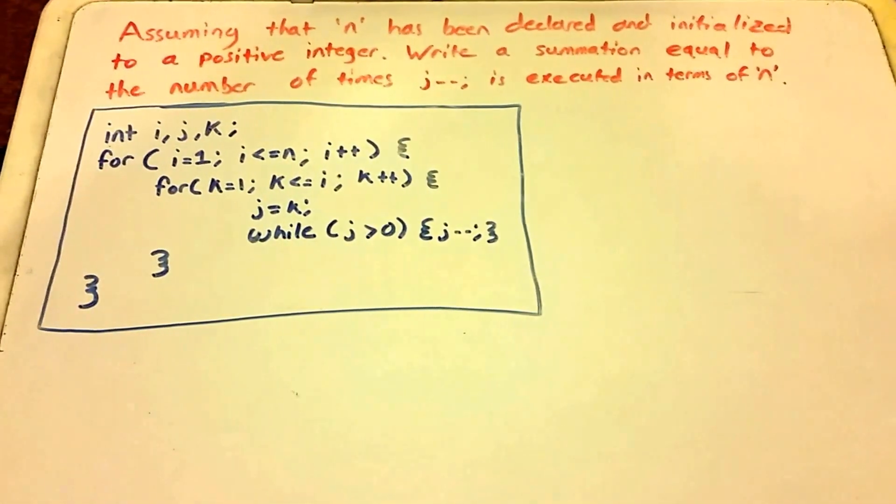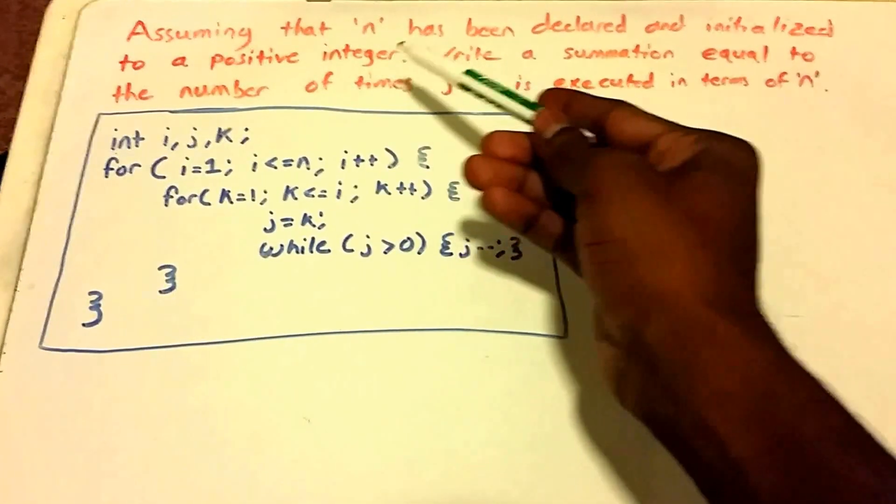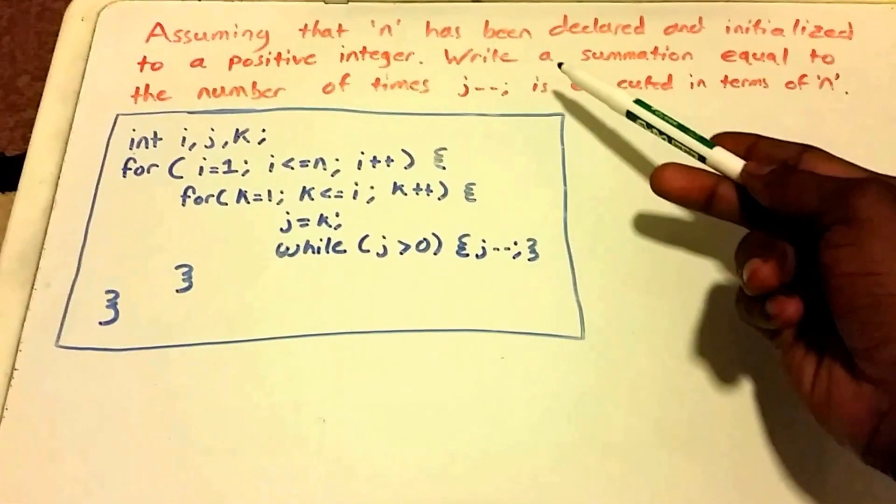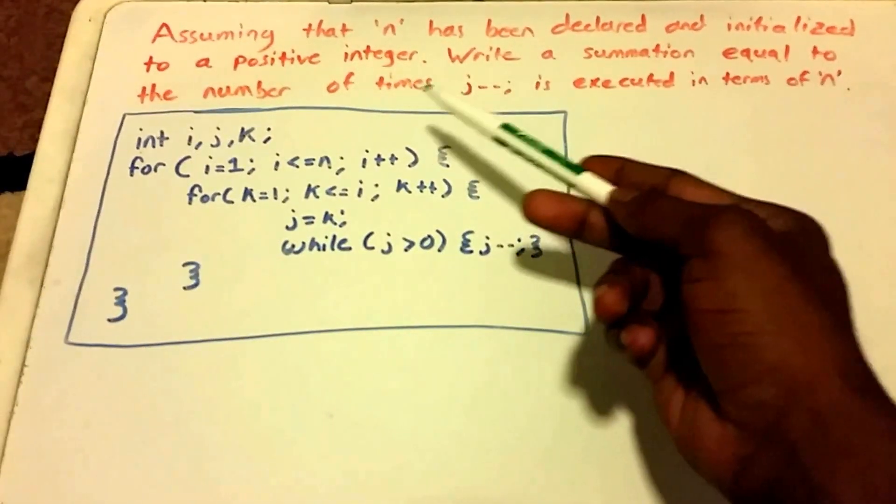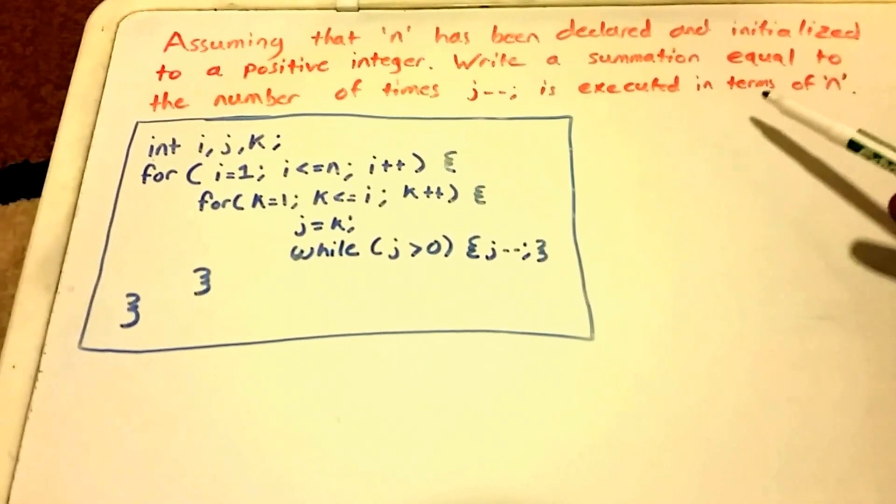Hey guys, and welcome to this video on algorithm analysis. So here we have our problem. It says, assuming that n has been declared and initialized to a positive integer, we want to write a summation equal to the number of times that j minus minus is executed, and we want to put this in terms of n.